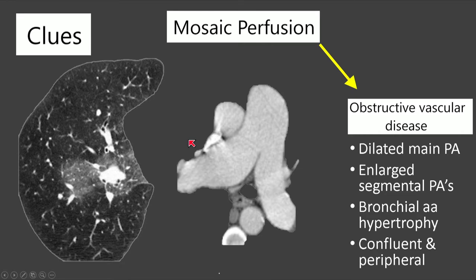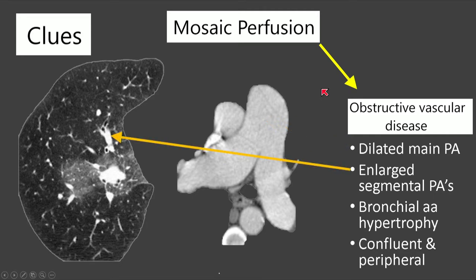For mosaic perfusion related to obstructive vascular disease, we look for arterial abnormalities. These include an enlarged main pulmonary artery — typically over 3 cm, or larger than the adjacent aorta as a more specific marker of pulmonary arterial hypertension — as well as enlarged intraparenchymal or segmental pulmonary arteries where the artery is much larger than the adjacent airway. We may also see bronchial artery hypertrophy, where large squiggly arteries arise from the aorta into the lung parenchyma because the pulmonary arteries are struggling to supply the lung.